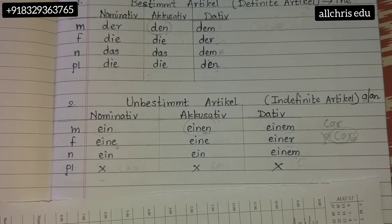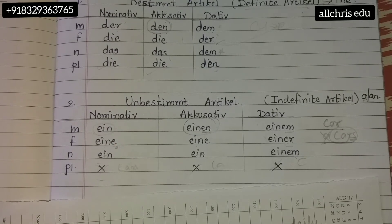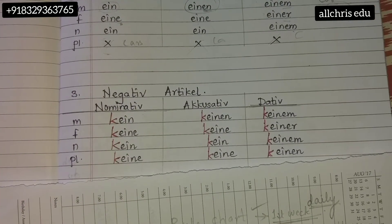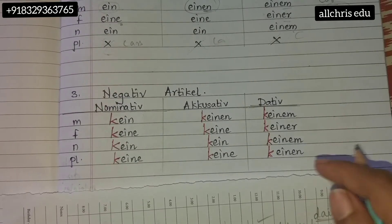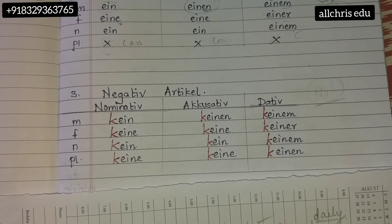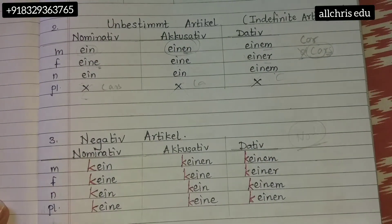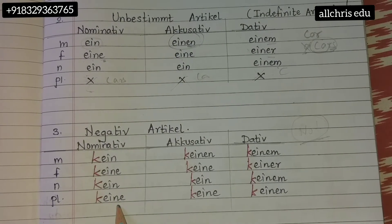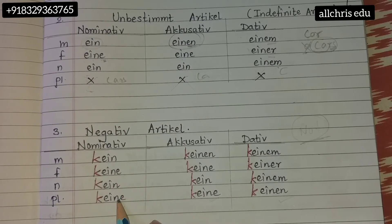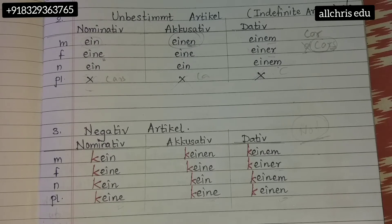The third chart is the negative article chart — Negativartikel. This is like saying 'not' — 'this is not a book,' 'this is not a pen.' If you compare the unbestimmter Artikel chart and the negative article chart, they are exactly the same except the plural form exists in the negative article chart. Female and plural look the same.